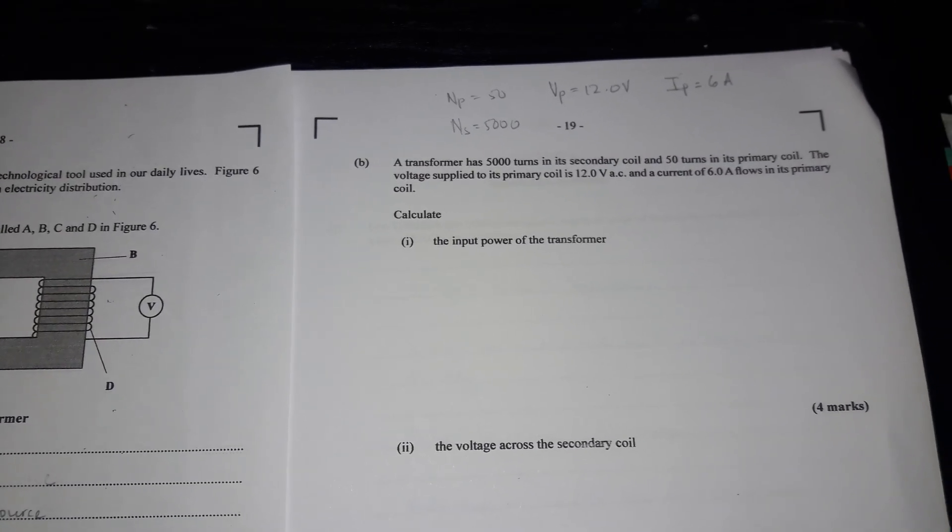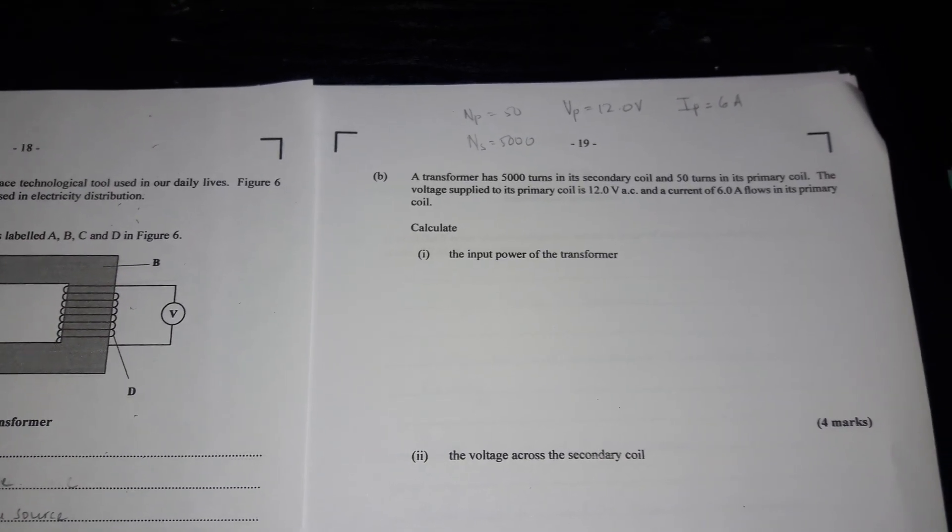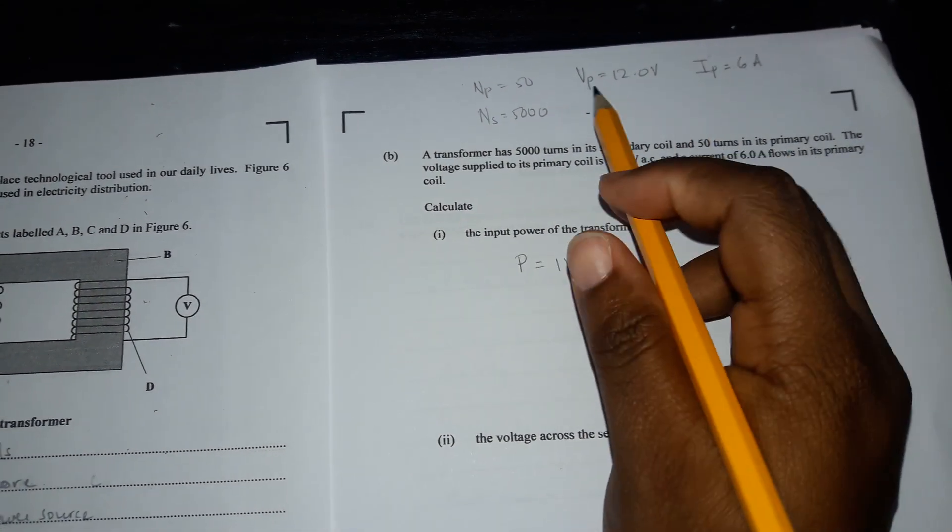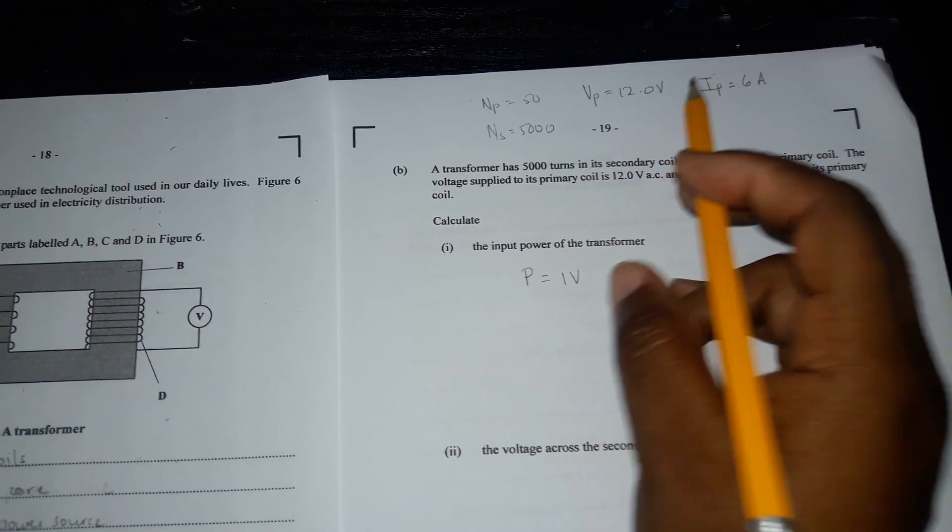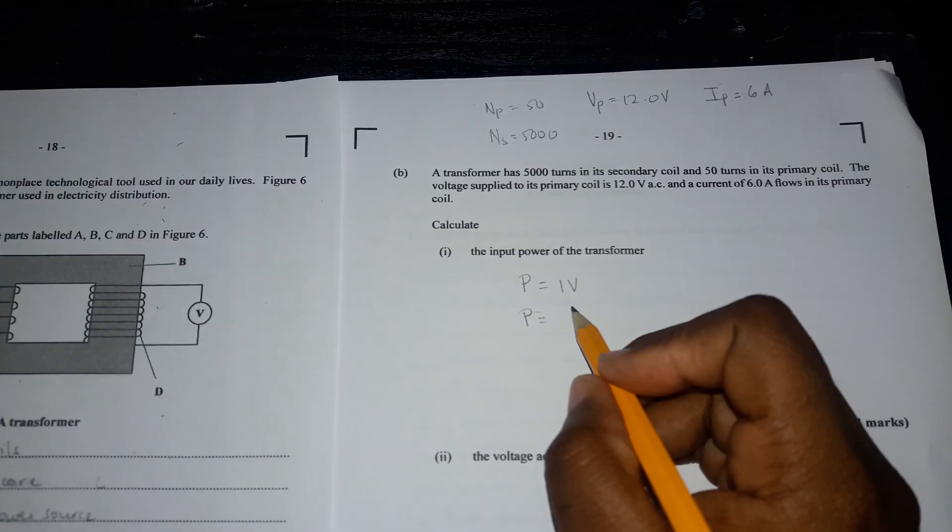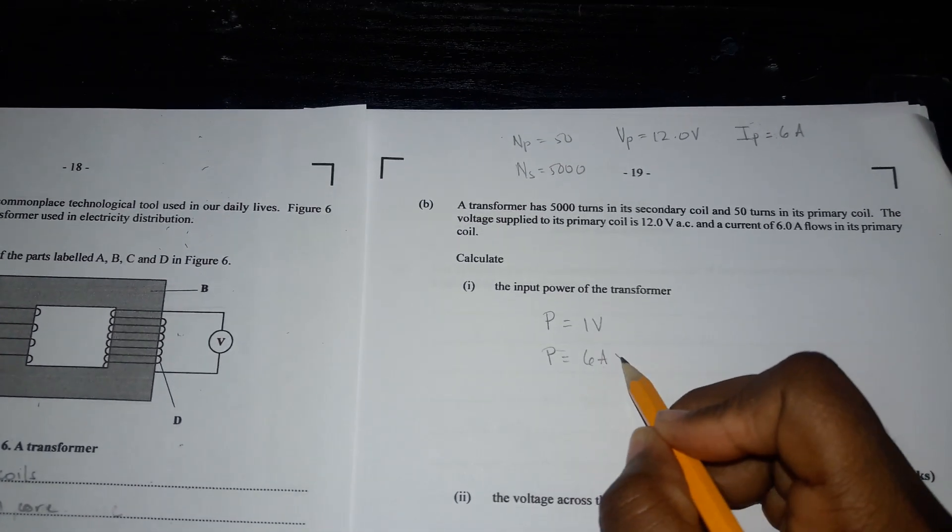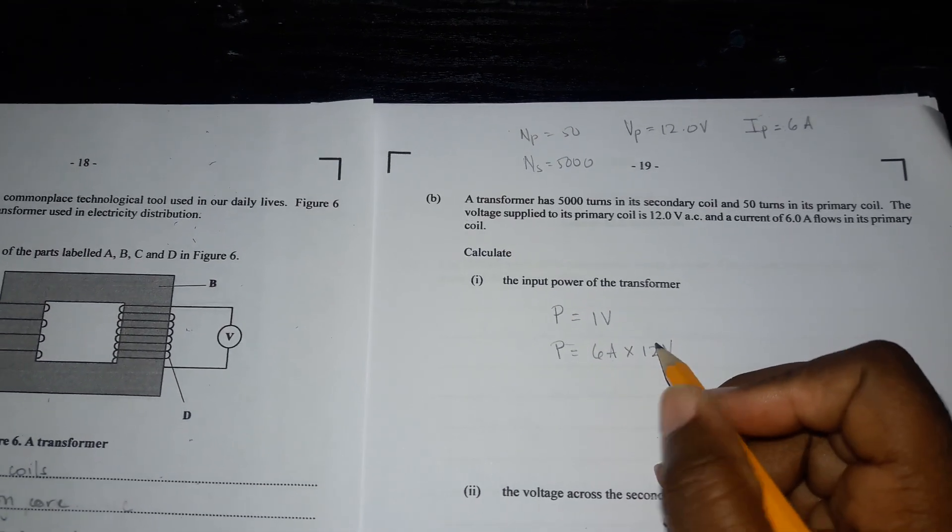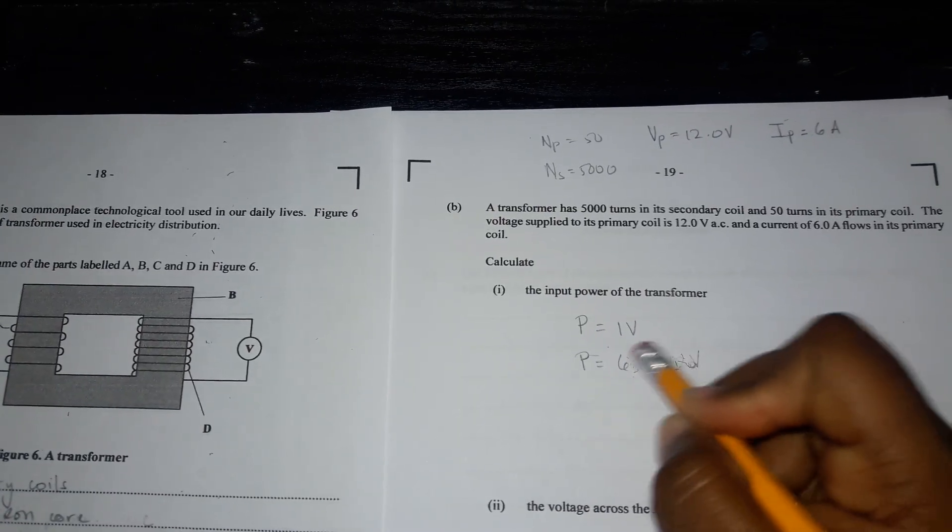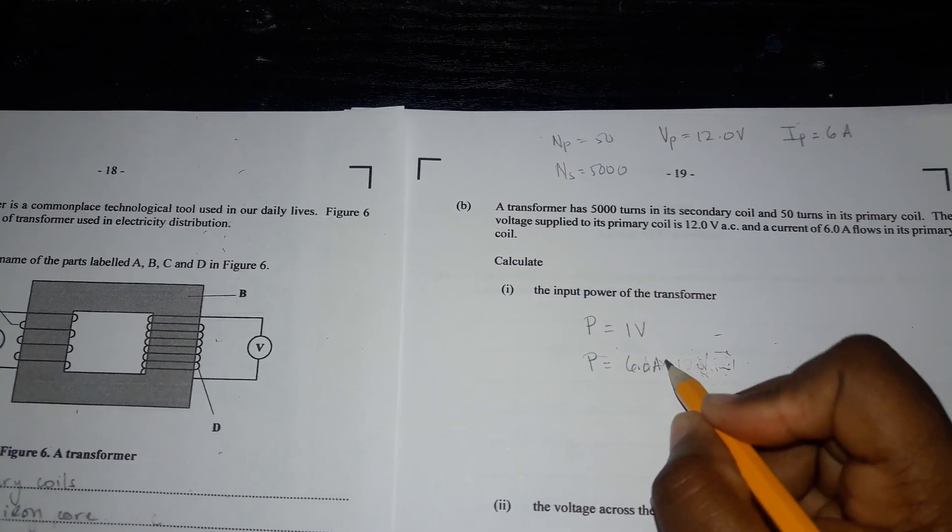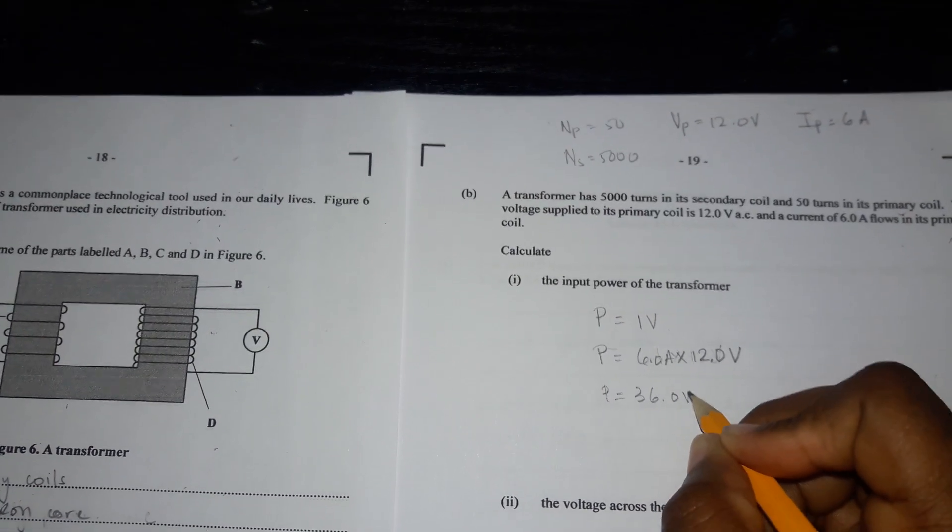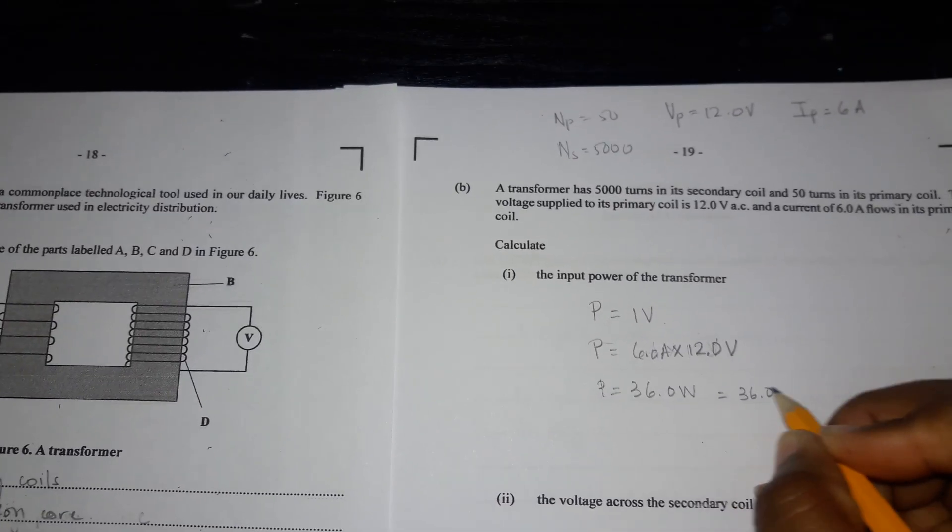Calculate the input power of the transformer. That would be P equals IV. Power equals IV. We have I and we have V in the primary section, so we can work out the power. The primary section is called the input side, so we're good to go. P equals 6.0 amps times 12.0 volts, which will give us 72.0 watts, equivalent to 72.0 joules per second.